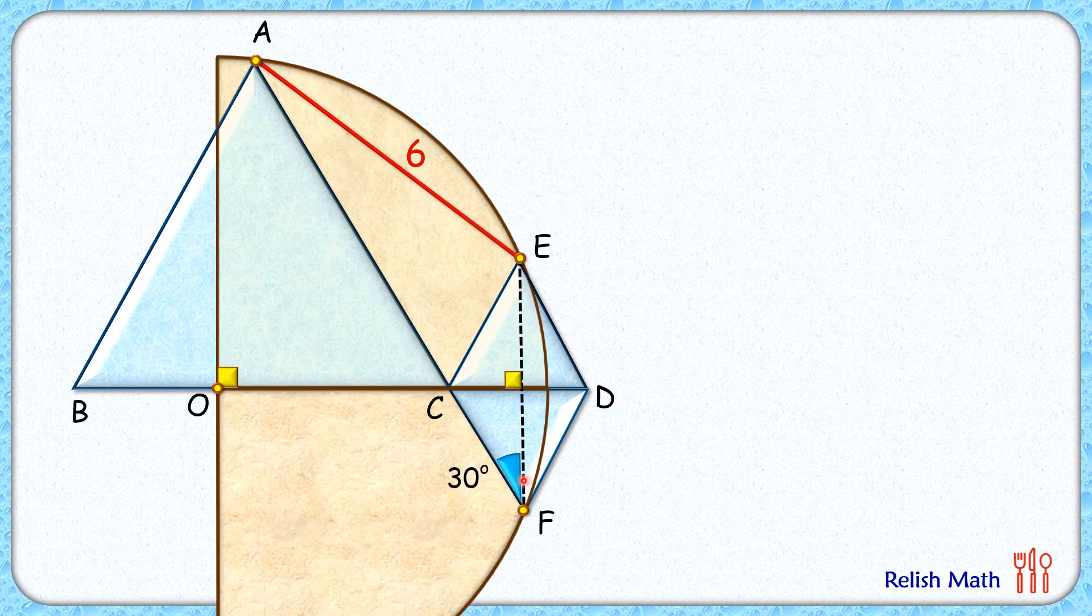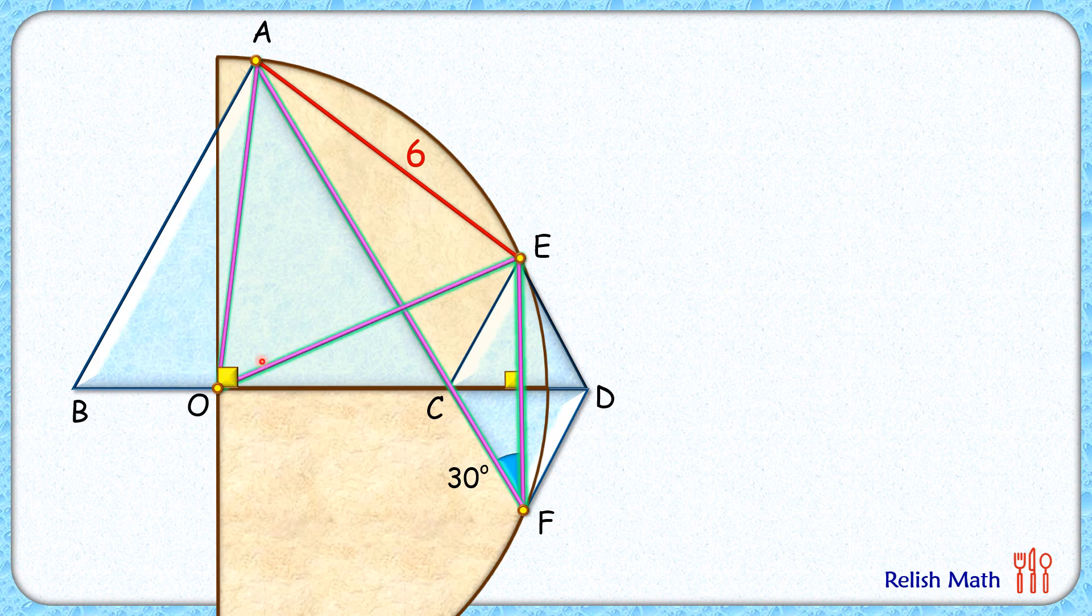Now here is the magic. If you look at this brown semicircle, then AE is the chord in that circle, and AE chord is sustaining an angle of 30 degrees at the circumference. And thus by theorem, this chord will sustain twice that angle at the center, and thus this angle here will be 60 degrees.